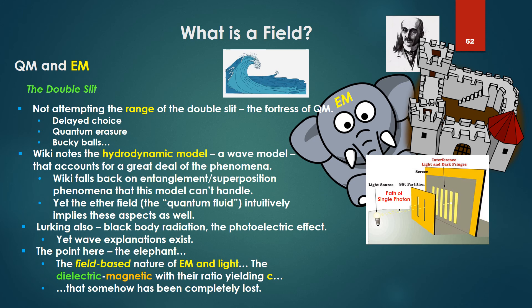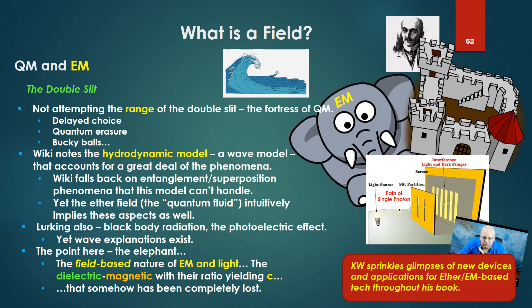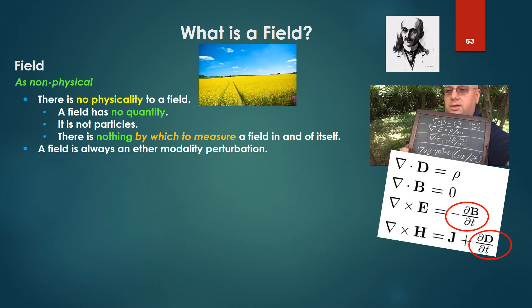Ken Wheeler sprinkles glimpses of new devices and applications via ether-based or EM-based technology throughout his book — devices based on this whole other vision we've been describing. And if indeed this is carried out and realized, then the fortress of QM is going to be under severe assault, because what you'll have is an emerging number of devices that simply cannot be explained by QM-based physics. So we come back to the fundamental question: the field. There's no physicality to a field. The field has no quantity; it is not particles. There is nothing by which to measure a field in and of itself. The field is always an ether modality perturbation.